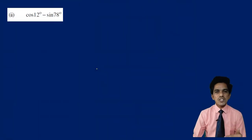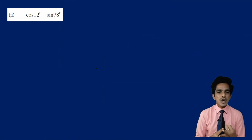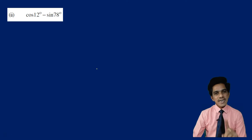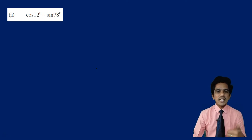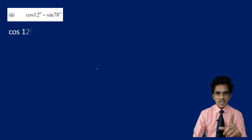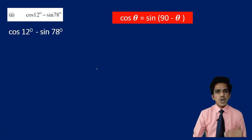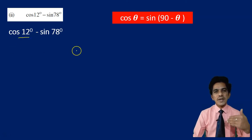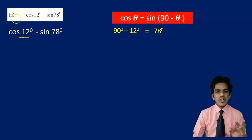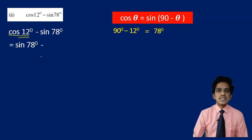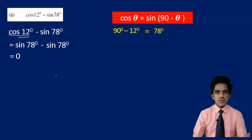Look at the next one: cos 12 degrees minus sin 78 degrees. Cos and sin are complementary ratios. I will convert cos 12 degrees into sin using the complementary formula. Since 90 minus 12 is 78, cos 12 degrees becomes sin 78 degrees. So we get sin 78 degrees minus sin 78 degrees. The difference of equal values is always 0, so the answer is 0.